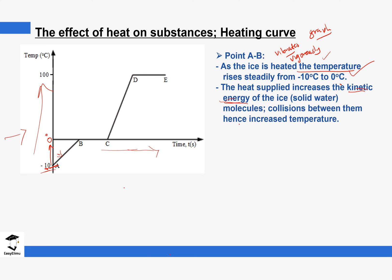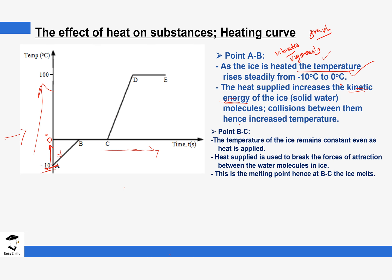Next we look at region B-C. The first thing you notice is that the temperature is constant. We always look at temperature, kinetic energy, and then the resulting particle movement. The temperature remains constant because the heat that was applied into the system is now being used to break the forces of attraction between the water molecules. The temperature stays the same because the ice molecules' forces in between are being weakened by the heat that was initially supplied.